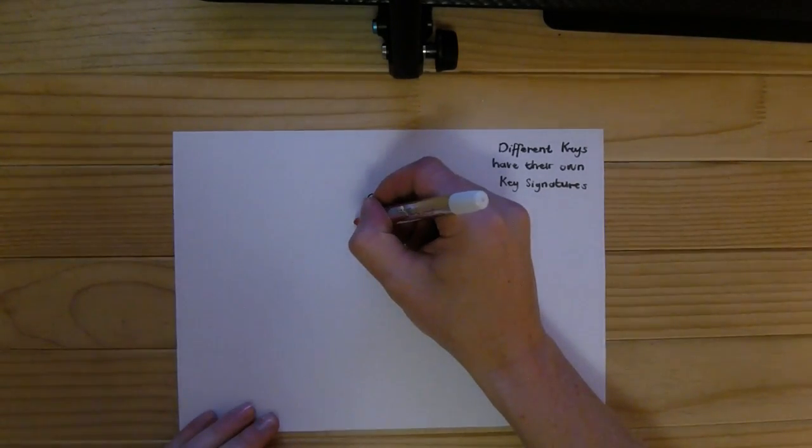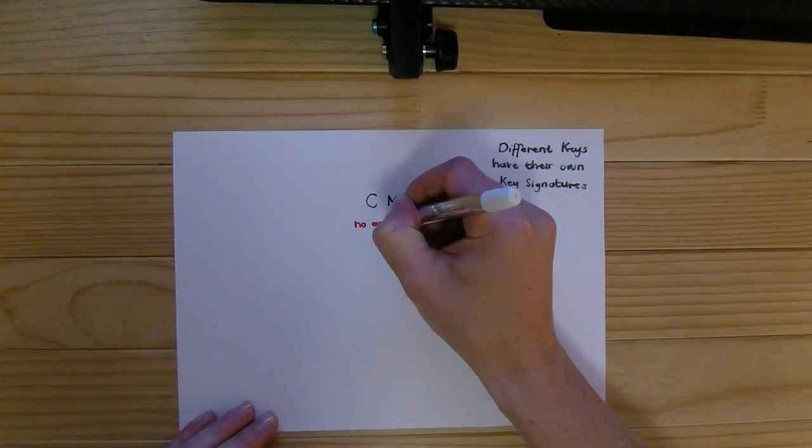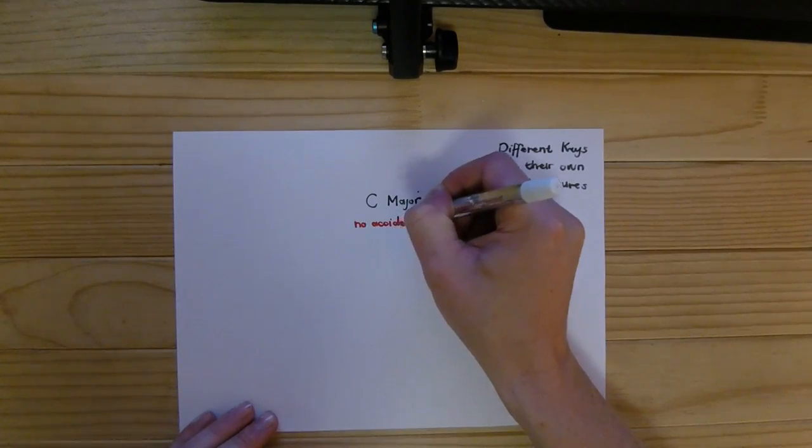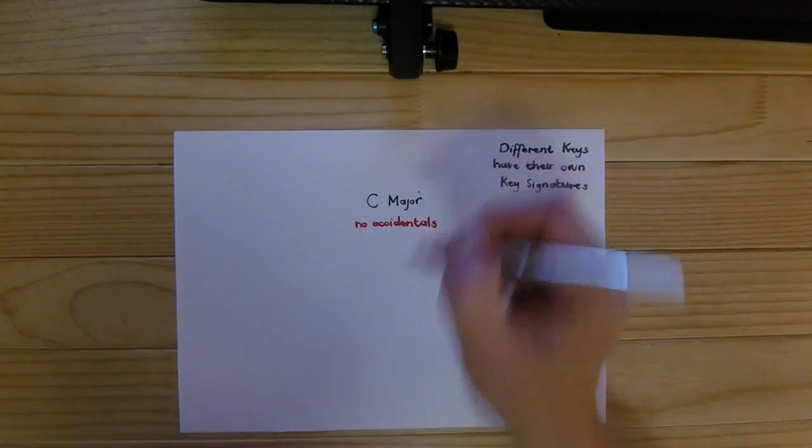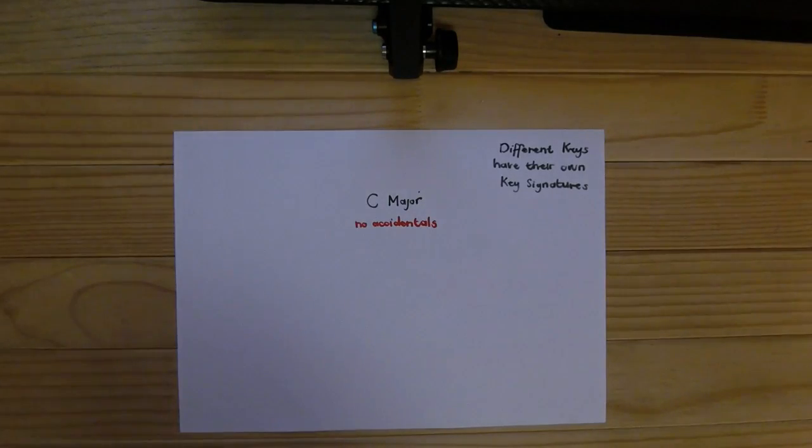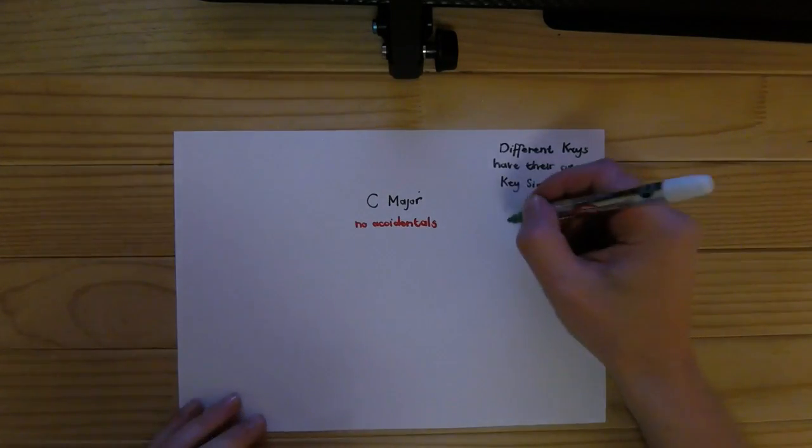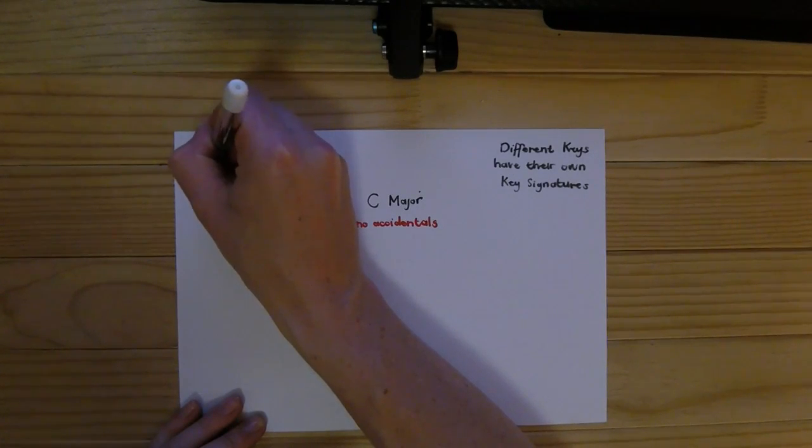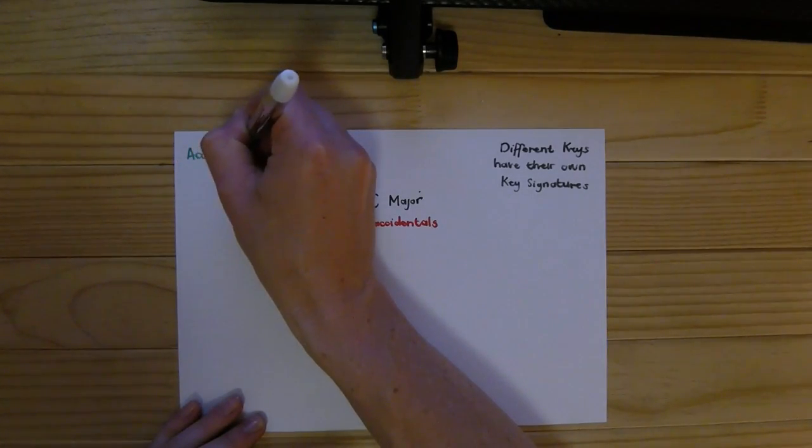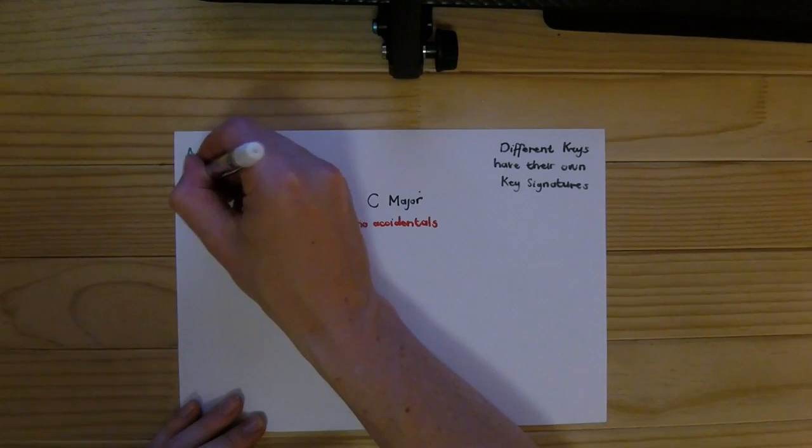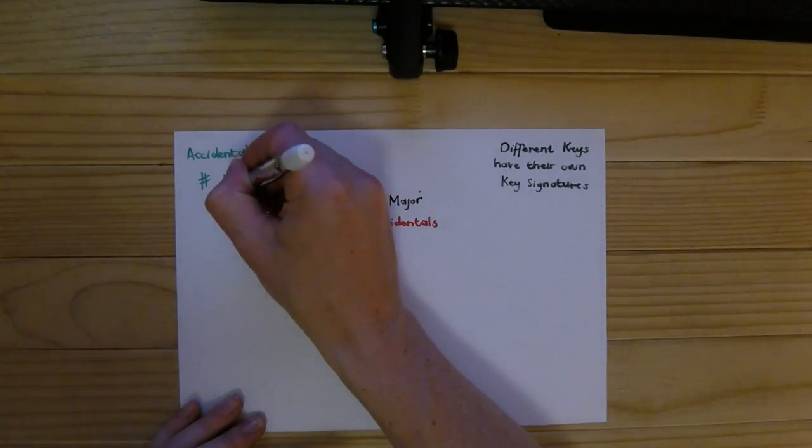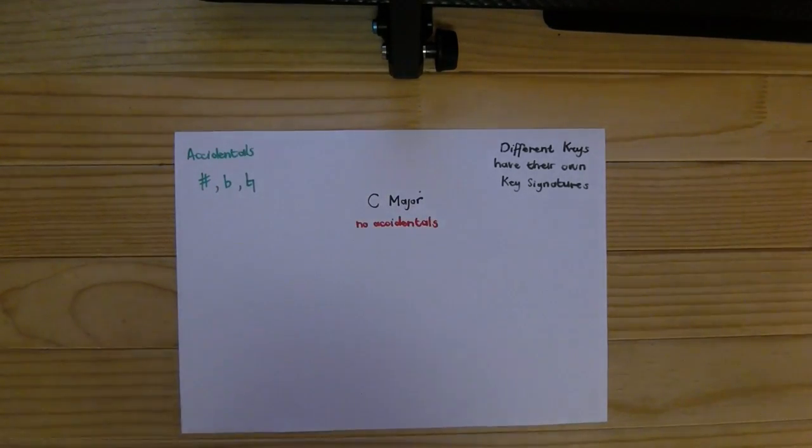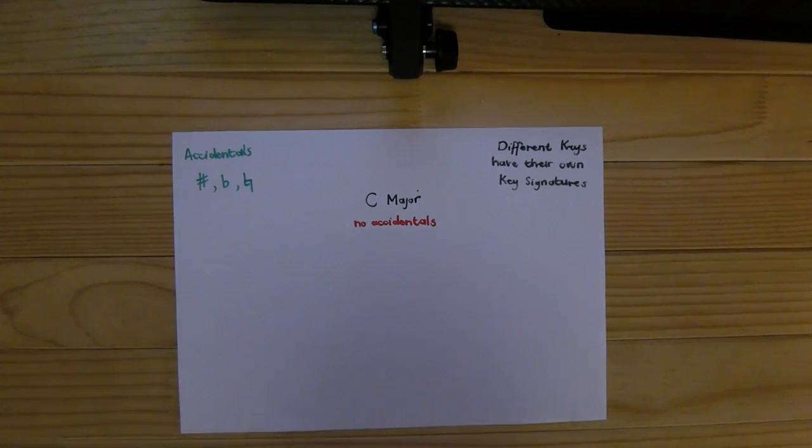Remember, an accidental is a sharp, a flat, or a natural sign. So there's no accidentals, nothing we're going to put in front, no black keys that we're going to play.